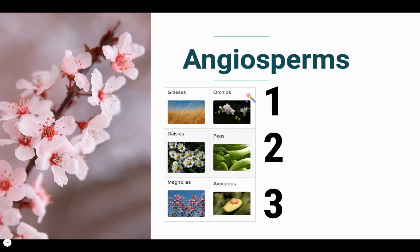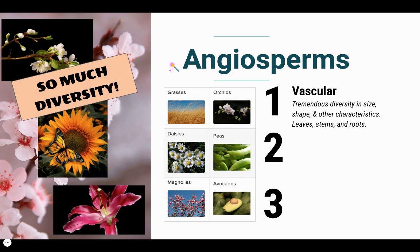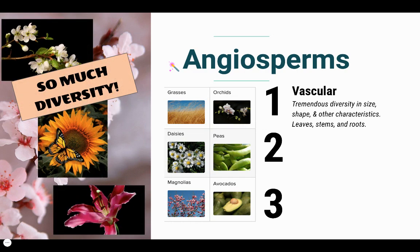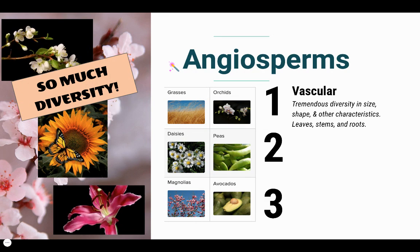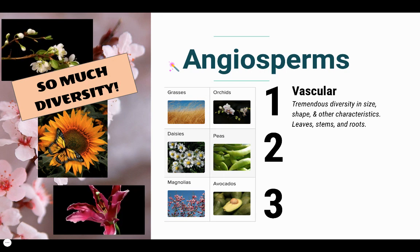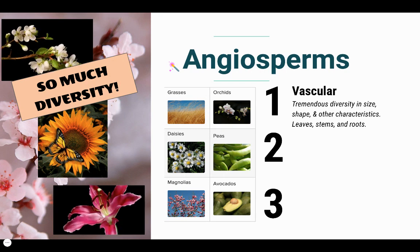Let's take a look at the last plant group — angiosperms. Angiosperms are the most evolved and the best adapted to life on land. They are vascular plants with incredible diversity. They have leaves, root systems, and stems. There's too much diversity to fully name, but just know there's an enormous variety within this plant group.